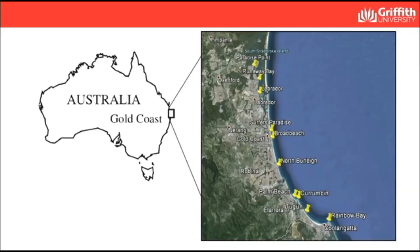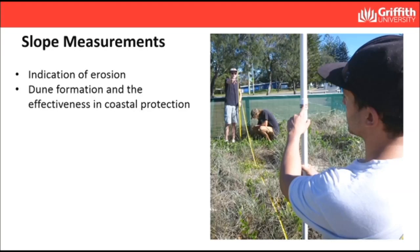We have 12 sites, ranging from Paradise Point in the north all the way down to Rainbow Bay in the south. Some of those areas are highly populated with tourism and you will see some changes in the results as we go further into this.